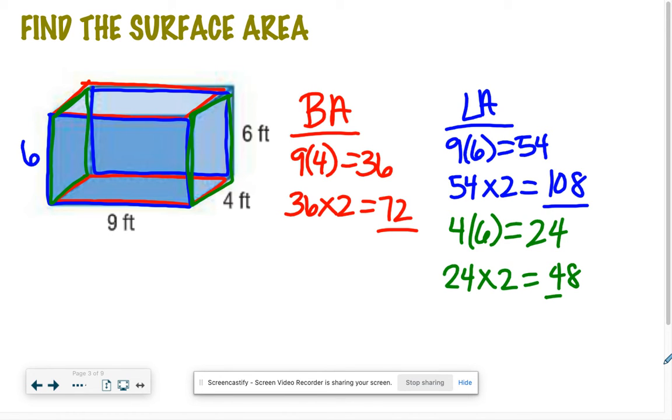And then we have the left and right walls, so the dimensions of this would be 4 and 6: 24 times 2, right, because this left wall over here would also be the same. So we get 48. And then in the end, folks, we add up those areas: 72, 108, 48, for a grand total of 228 feet squared.